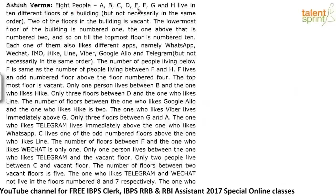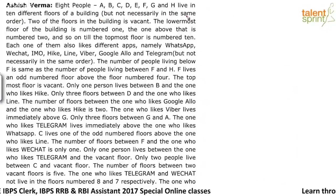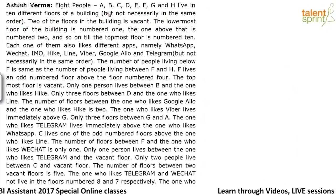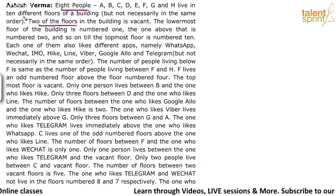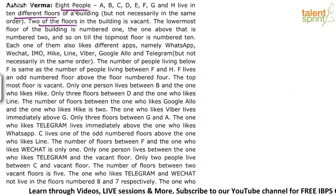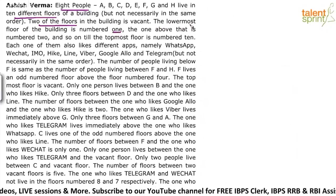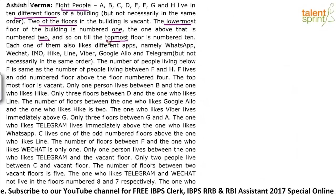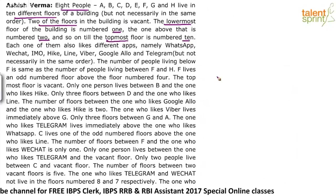Eight people A, B, C, D, E, F, G and H live on 10 different floors of a building, but not necessarily in the same order. Two of the floors in the building are vacant. So clearly there are eight people with two floors being vacant, giving us a total of 10 floors. The lowermost floor is numbered one, and the one above that is number two, and so on until the topmost floor is number 10.